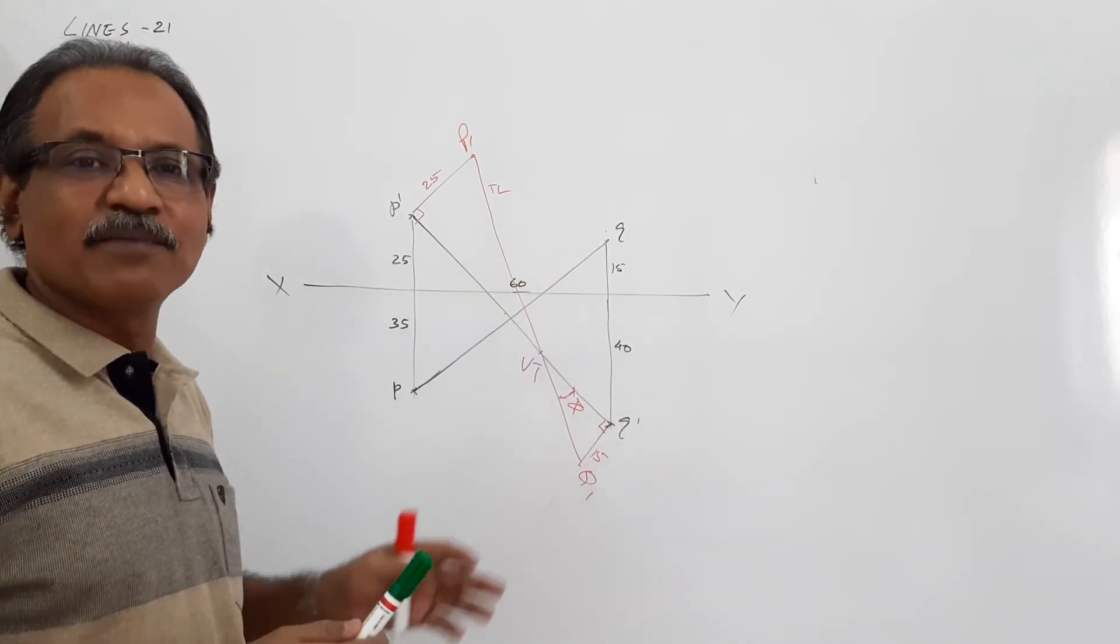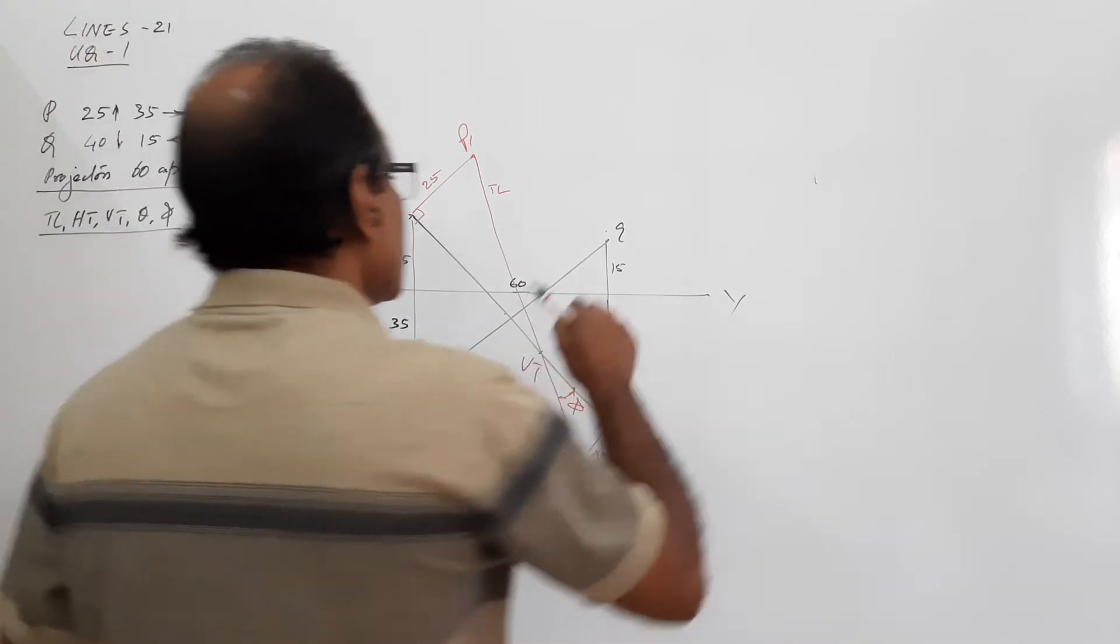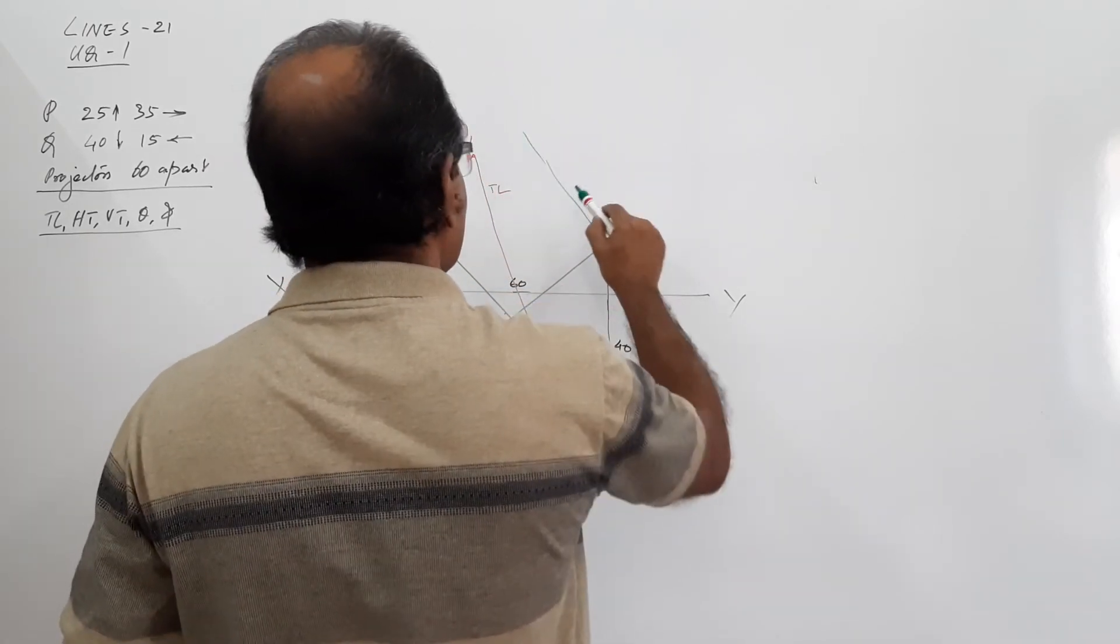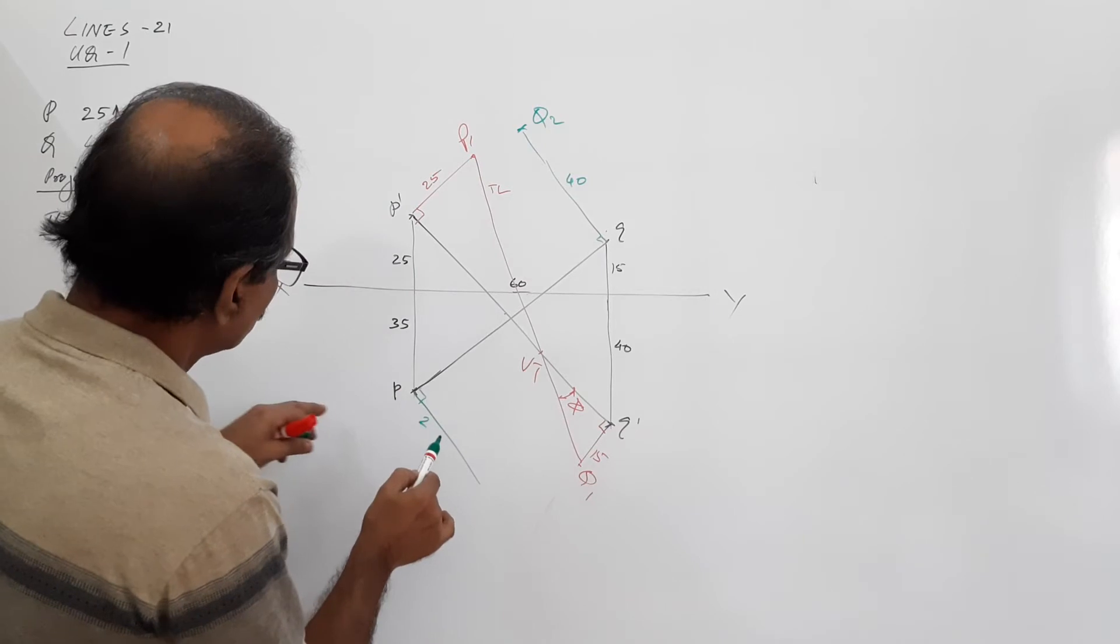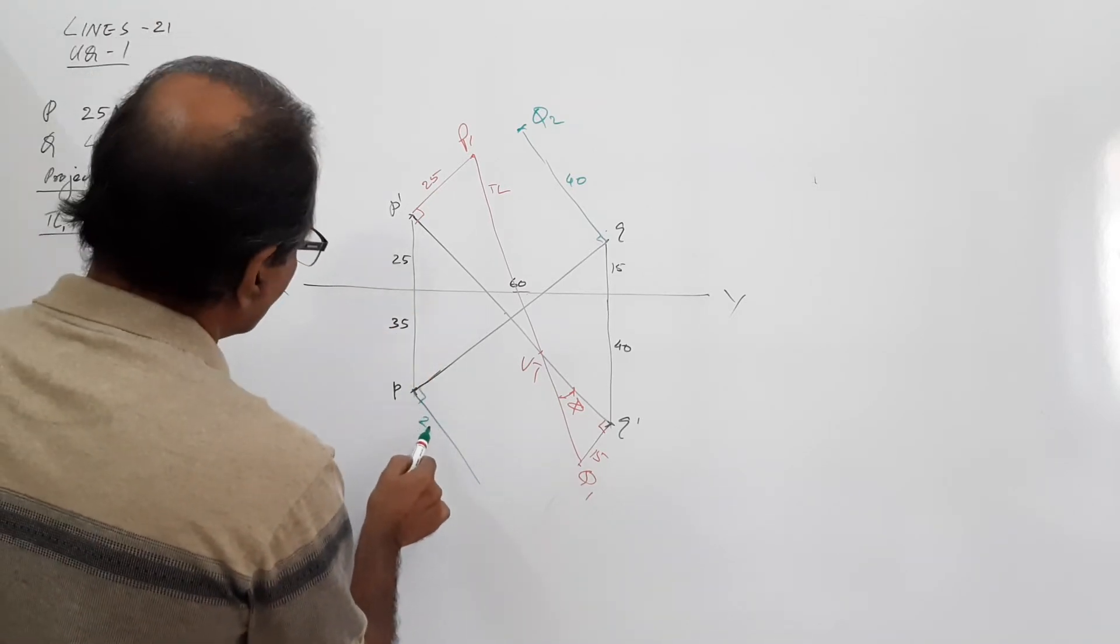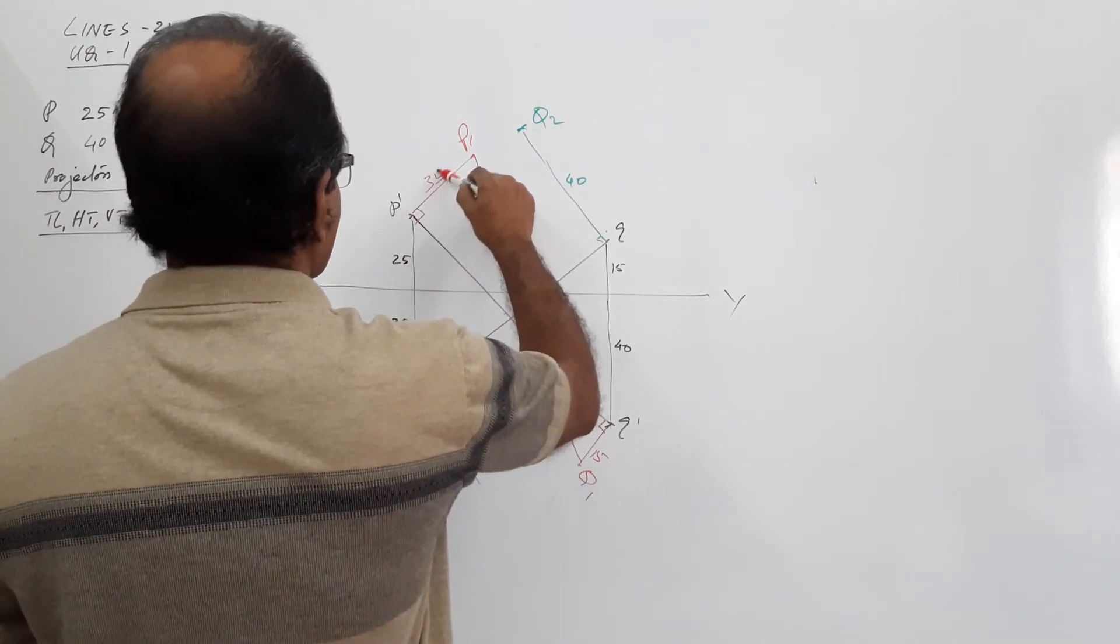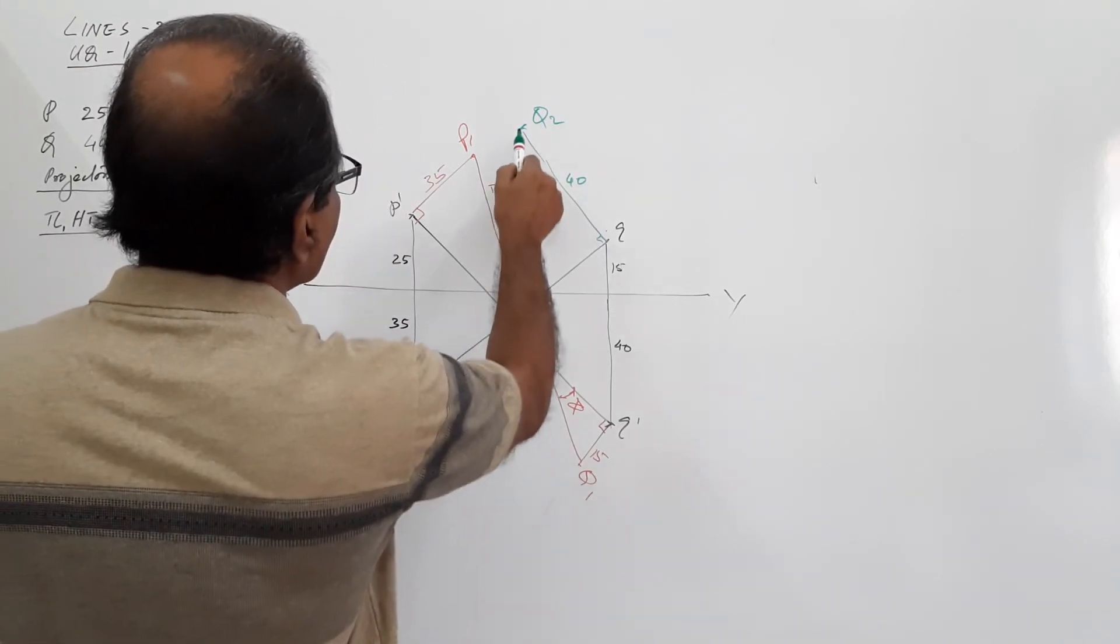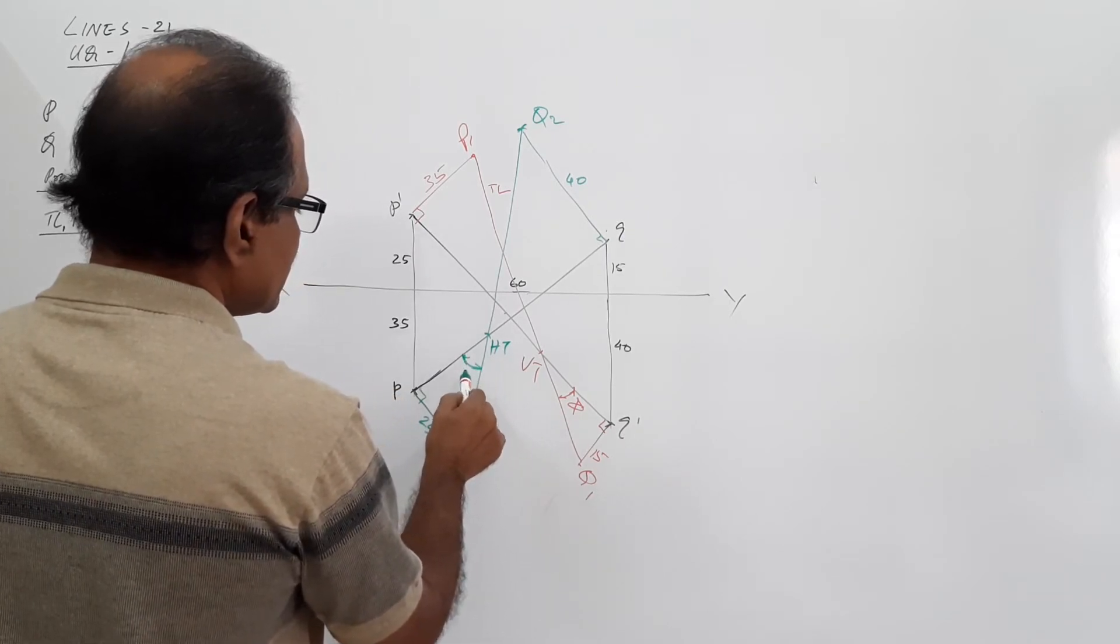Don't mix up with existing lines so that it becomes confusing. Go for the best possible orientation. At Q draw a perpendicular, at P draw a perpendicular. 40mm Q2, 25mm. This is HT and this angle is theta.